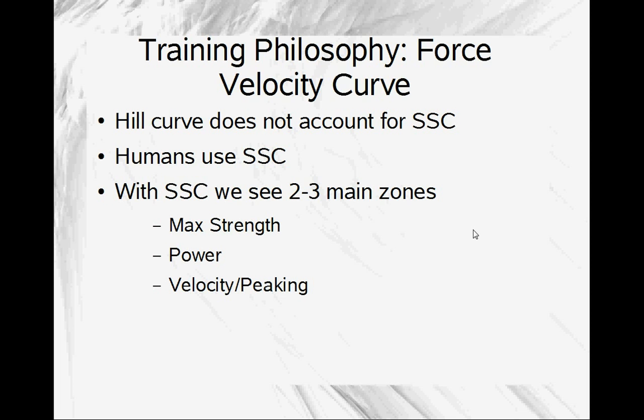And when we look at the force velocity curve with the stretch shortening cycle taken into account, with Komi's research, we see two to three main zones. You could, if you wanted to really just keep it super simple, max strength and power phase, that top half of the force velocity curve with the dark line, you could lump those together and then just have a velocity and peaking phase. I like to kind of separate them out a little bit, so we have max strength, we go through a power phase, and then a high velocity or peaking phase.